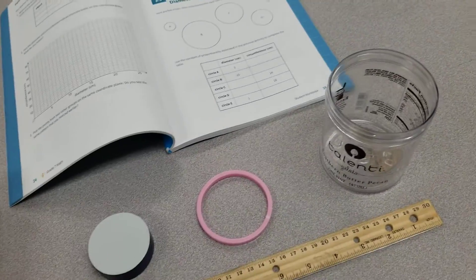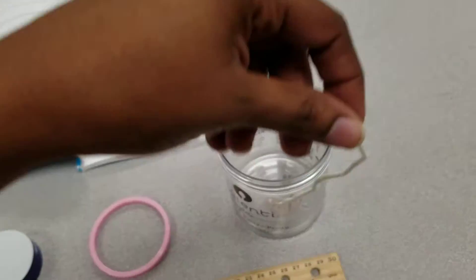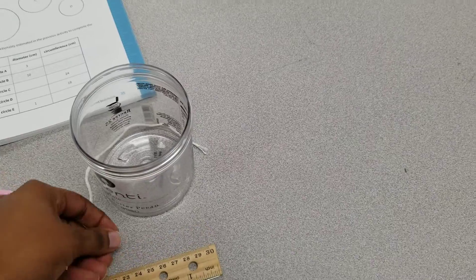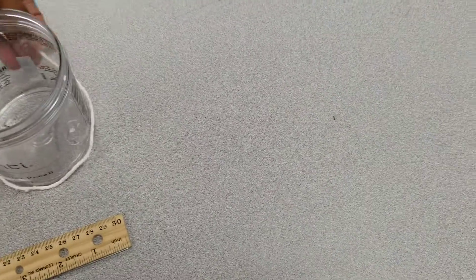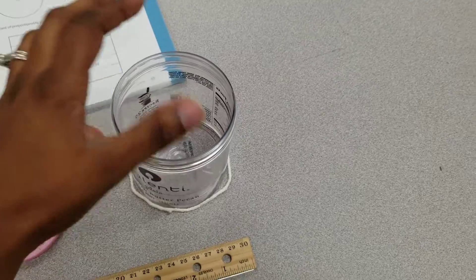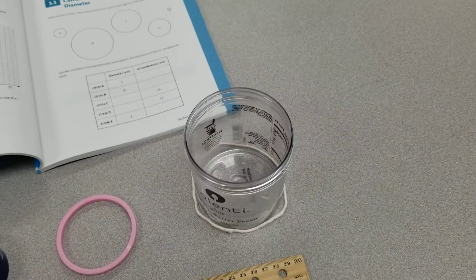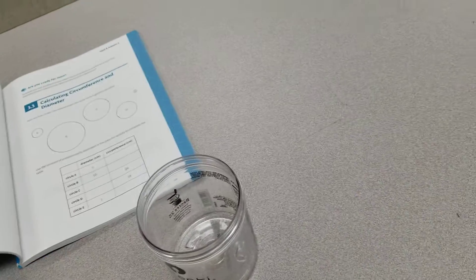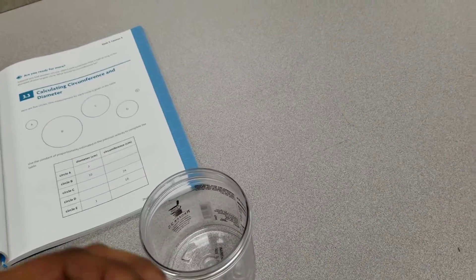The first thing I want to do is choose an object and take the string and wrap the string all the way around my object, probably pick it up and use the string as a measuring tool. I've already pre-cut this string and I found that this string goes all the way around my object here.